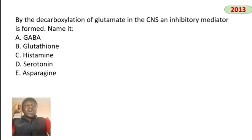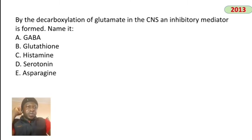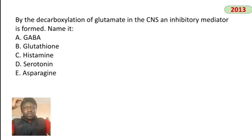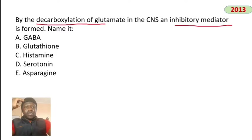By decarboxylation of glutamate in the central nervous system, an inhibitory mediator is formed — GABA (gamma-aminobutyric acid), an inhibitory neurotransmitter.